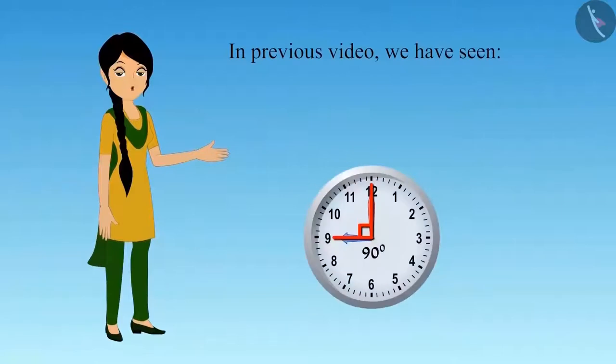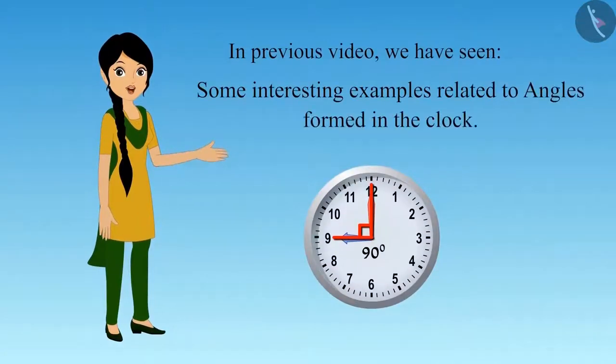Hello friends, in the previous video, we have seen how the angles of 90 and 0 degrees are formed in the clock with the help of some interesting examples.